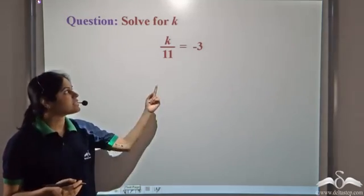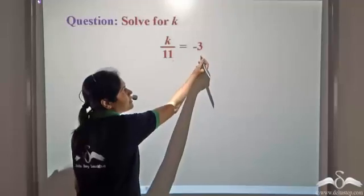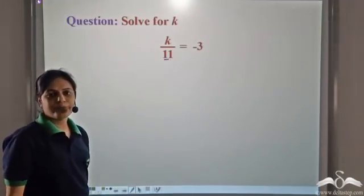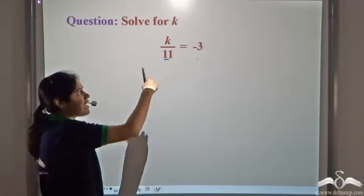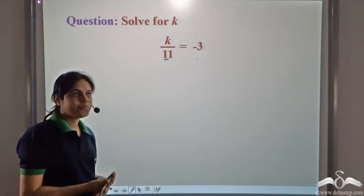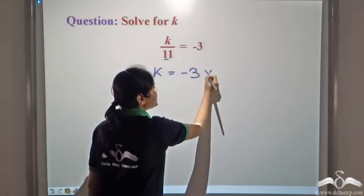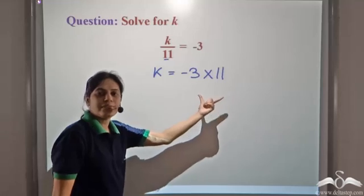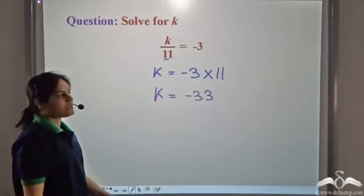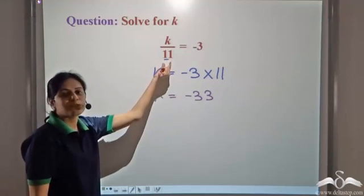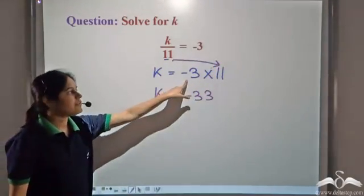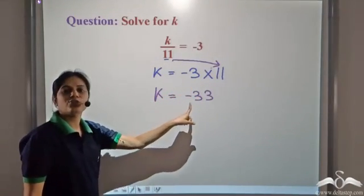Can you solve for k in this equation? We have k divided by 11 is equal to negative 3. In order to have only the variable, we need to get rid of this 11. So we can transpose this 11 to the right hand side. Division when transposed becomes multiplication, so we write negative 3 into 11, giving us k is equal to negative 33.